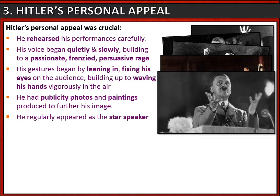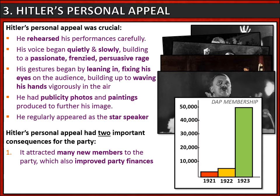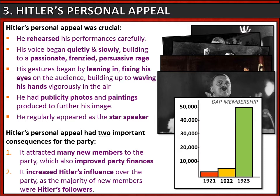Hitler's personal appeal had two important consequences for the party. First, it attracted many new members — membership leapt to about 50,000 by 1923. These new members brought new finance; membership fees increased and the party earned more money to spend. Secondly, Hitler's personal appeal increased his influence over the party. The new members who joined were mostly Hitler's followers — attracted to the party because of him and loyal to him — giving him an important power base within the party.